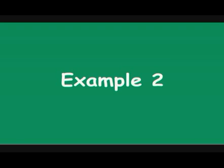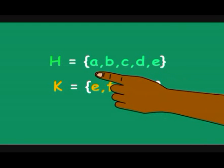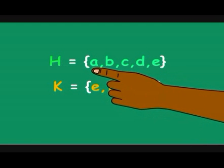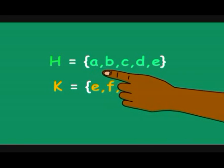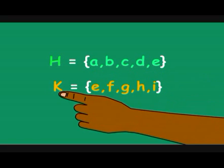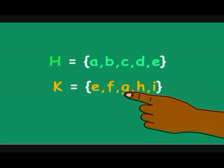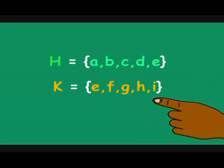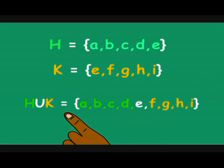Let's look at another example. Here we have two sets. The members of set H are A, B, C, D, and E. The set K and the members of K are E, F, G, H, and I. Note that E is in both sets.